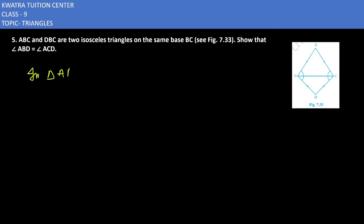First of all, in triangle ABC, we can see that AB is equal to AC because it is an isosceles triangle. We know that opposite angles are equal and the base angles are equal. So I'm taking the base angle as angle one and the other base angle as angle two. So angle one is equal to angle two, as it is an isosceles triangle.